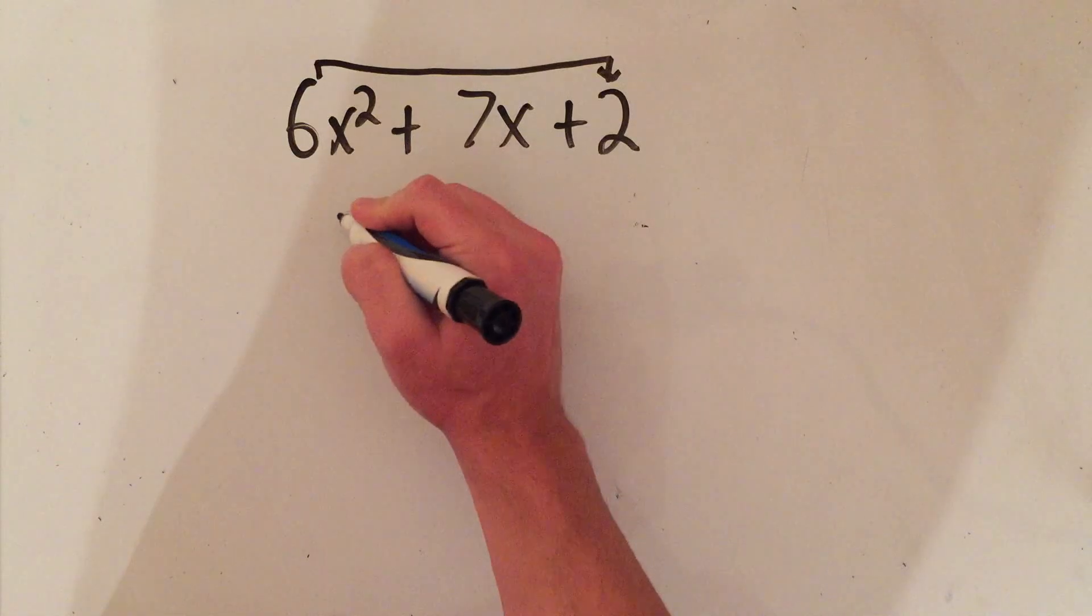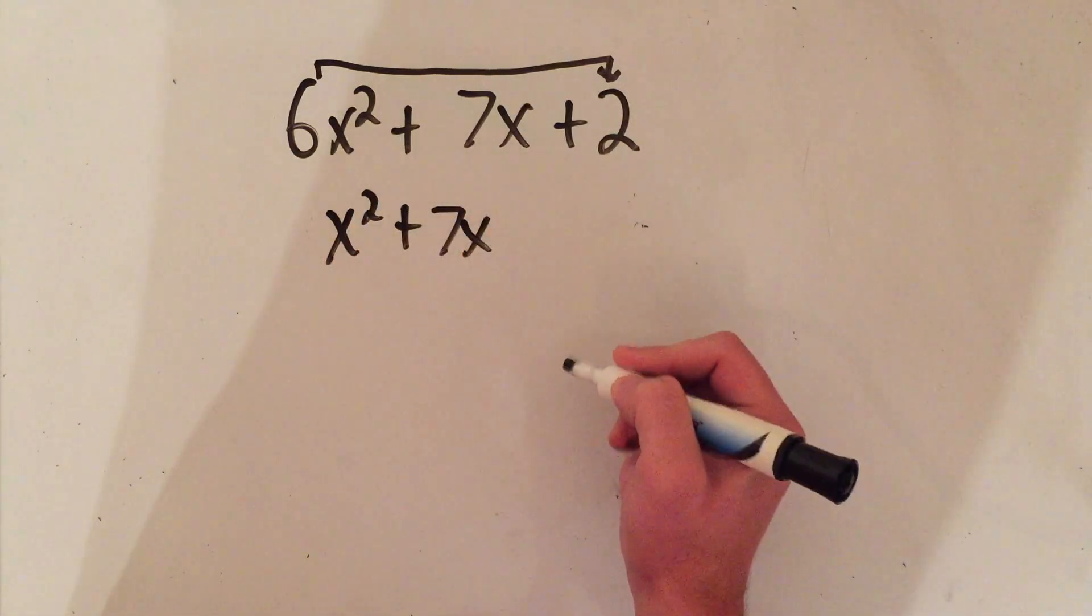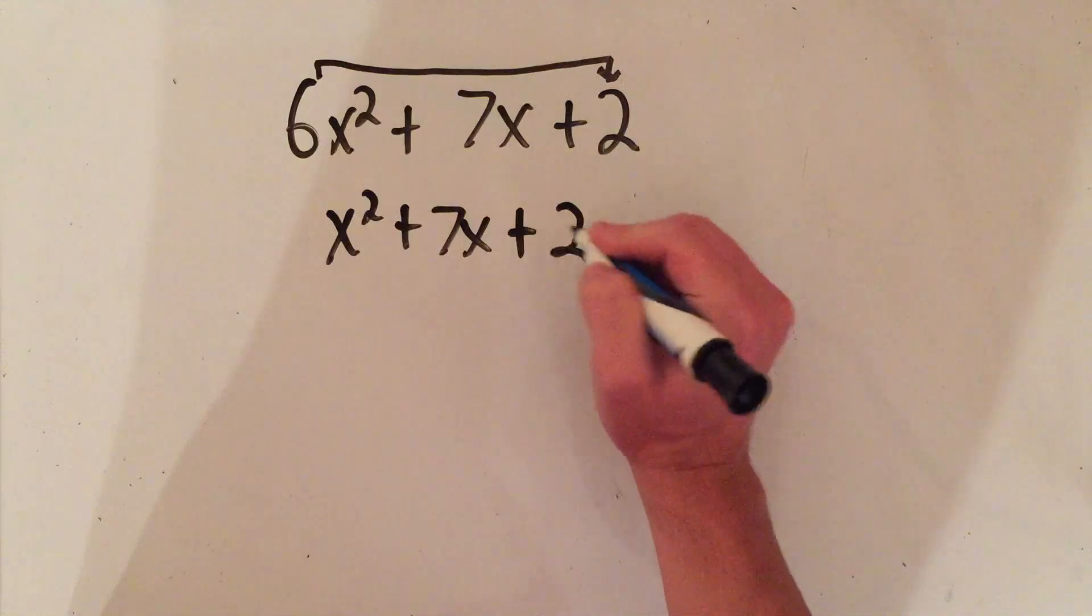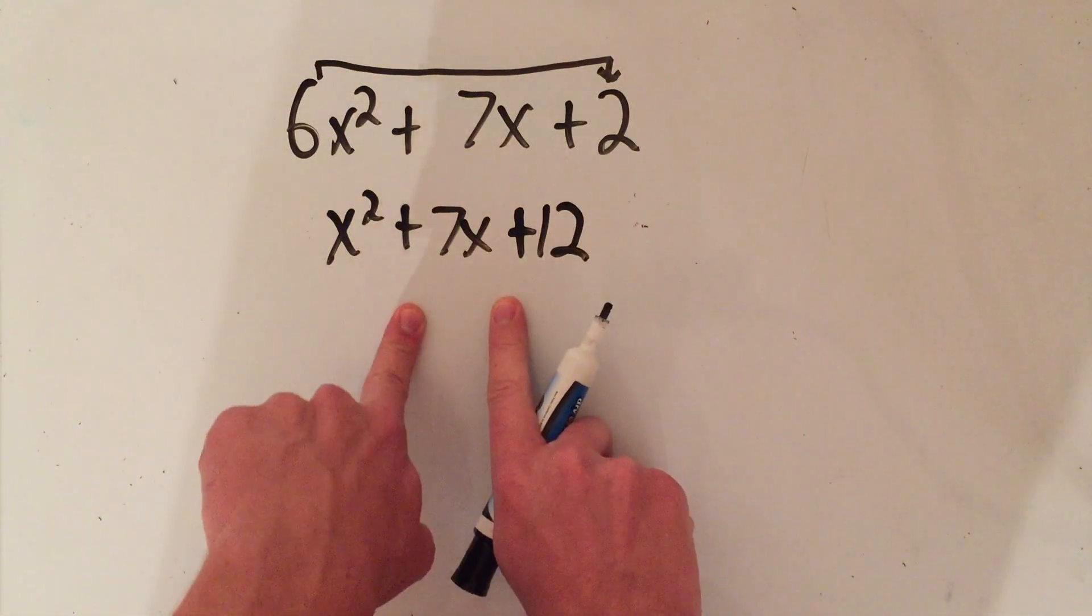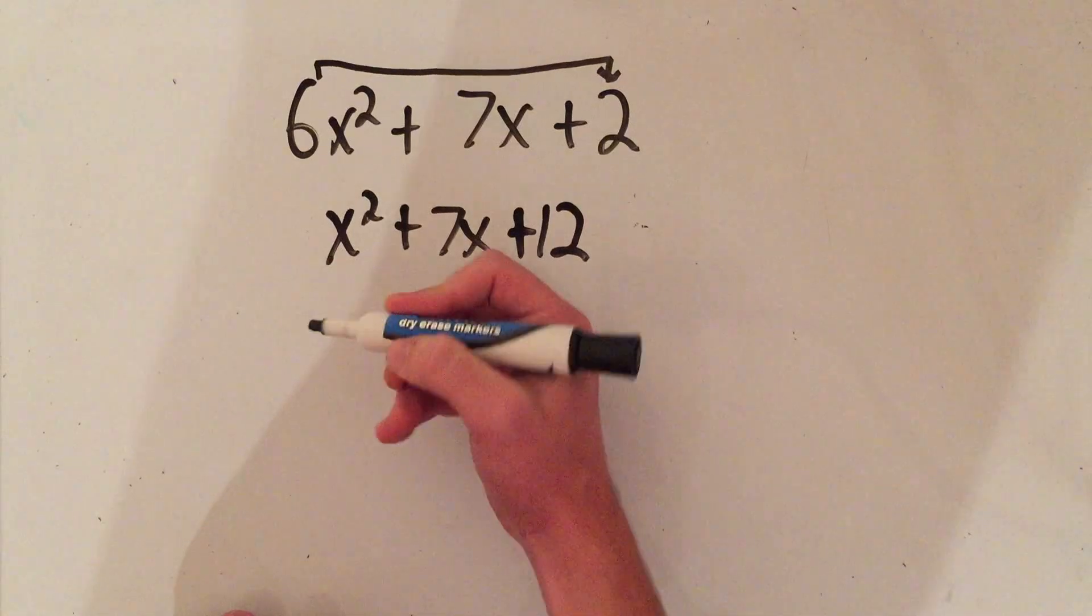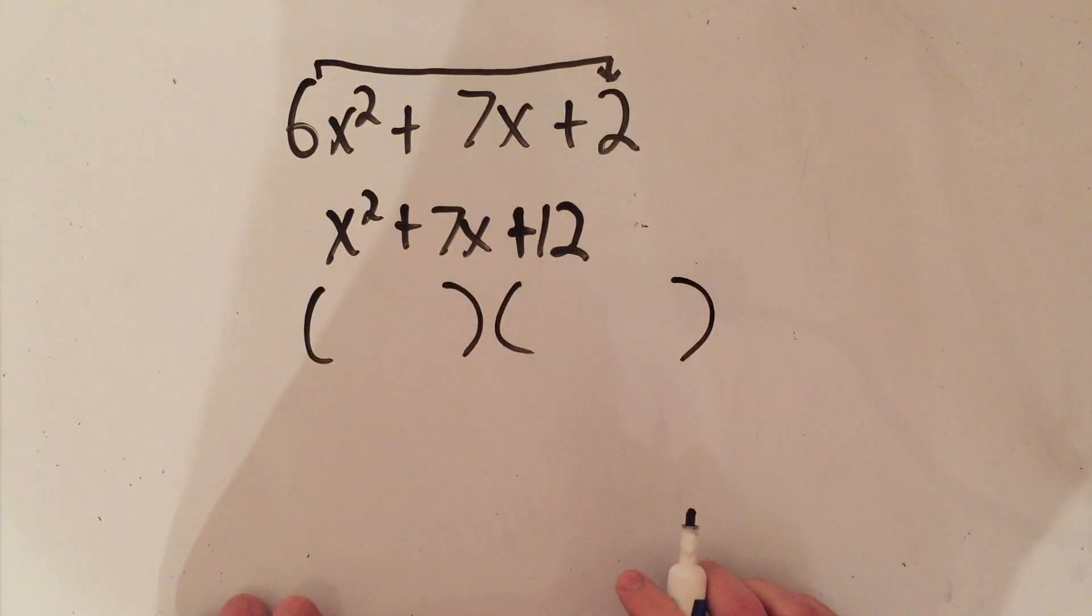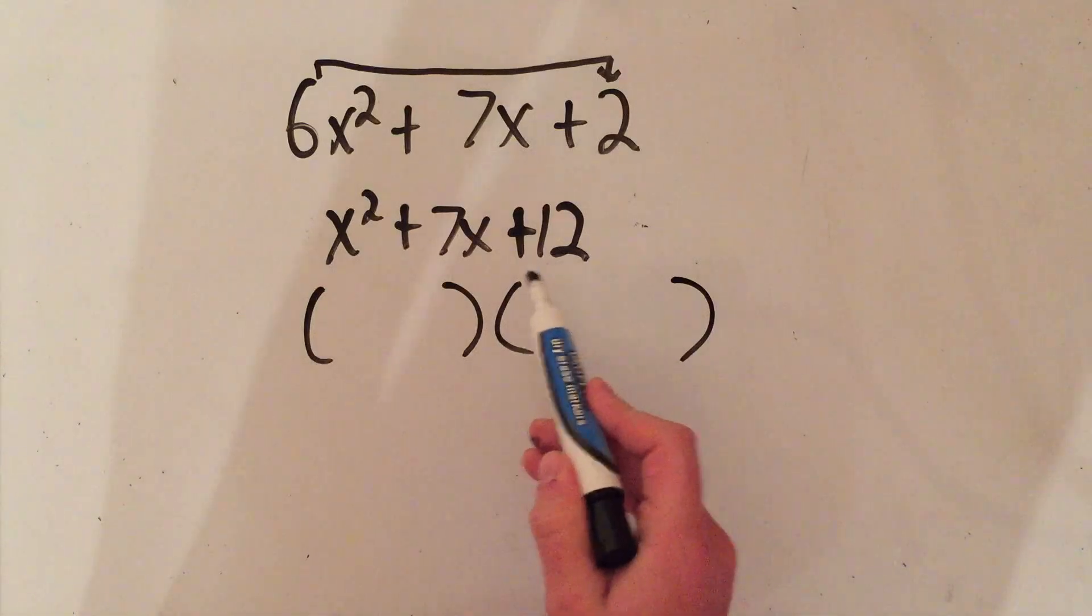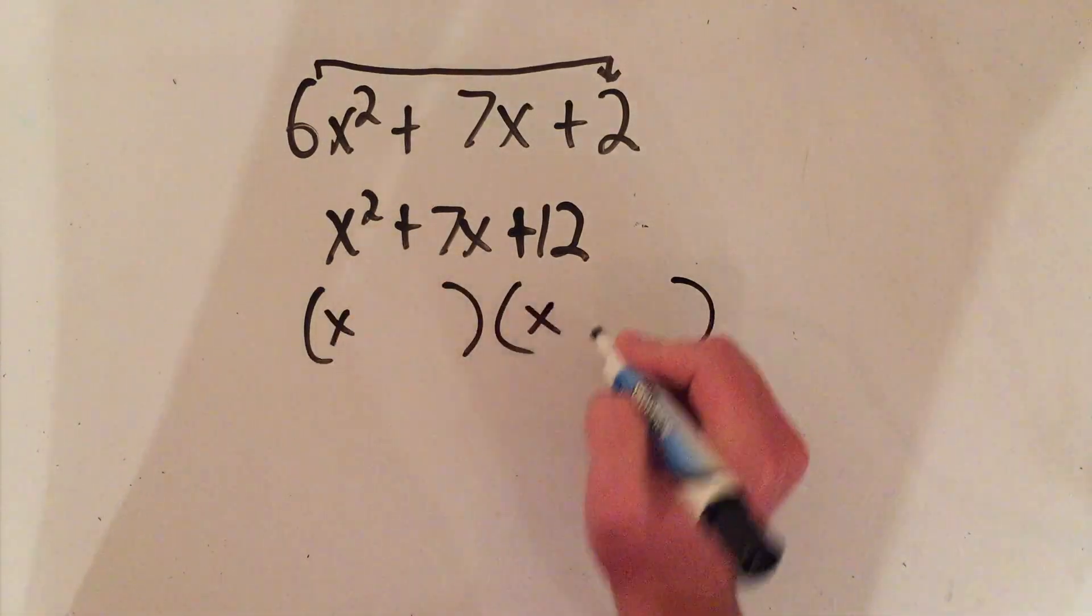So I'm gonna rewrite this: x squared plus 7x plus, and 2 times 6 is 12. Okay, now pretend this is an easy trinomial to factor. Since there's a 1 in front of the x squared, I just have to look for two numbers that multiply to 12 and add to 7.